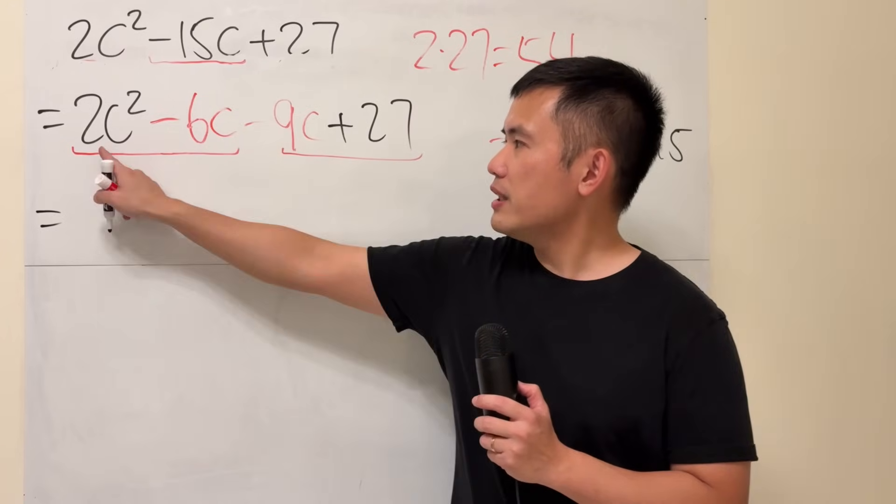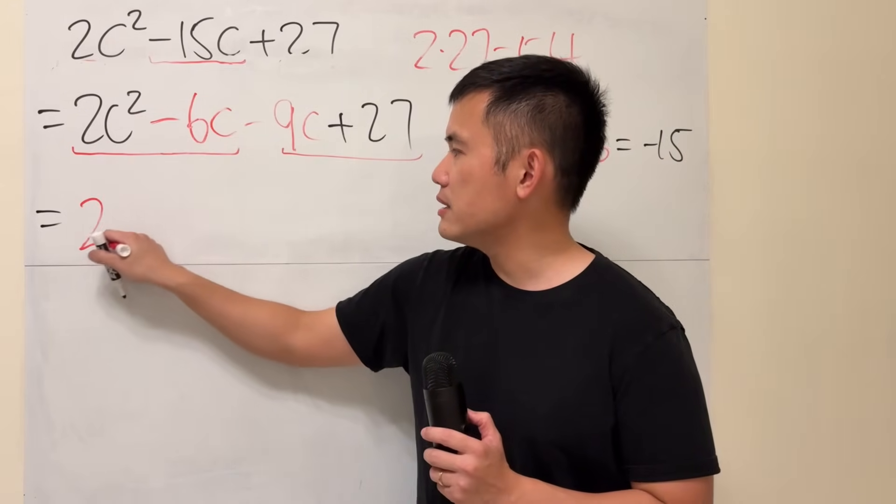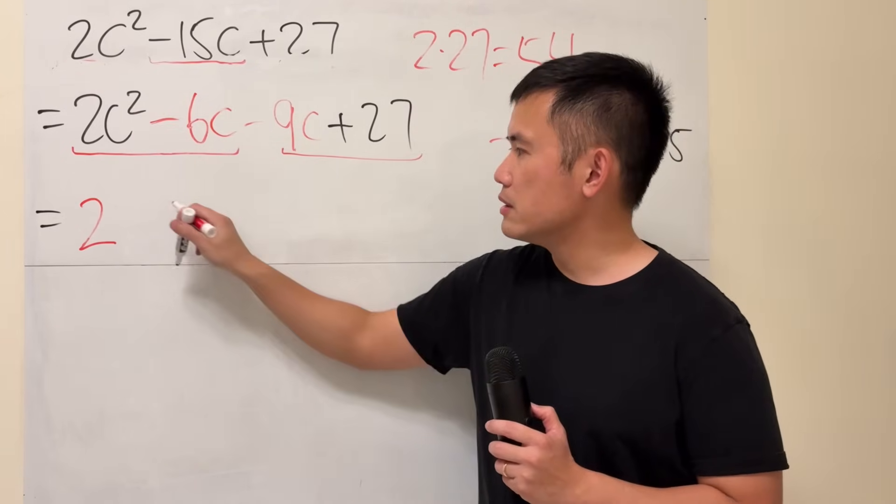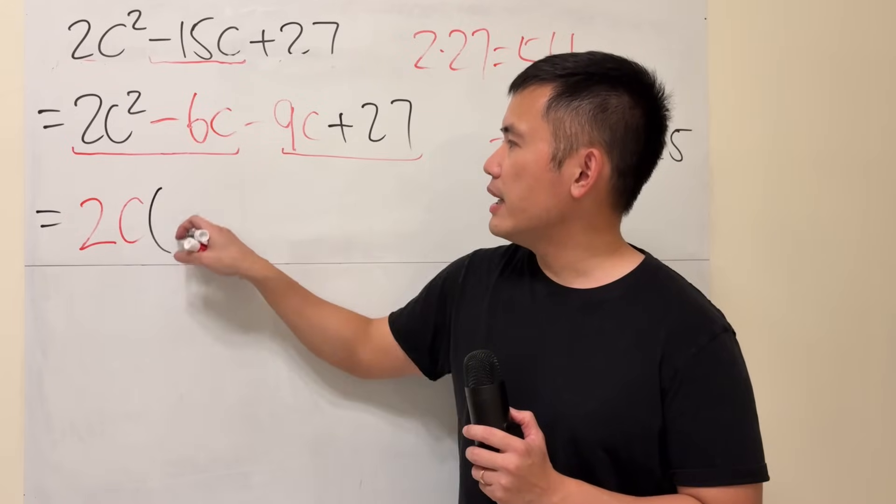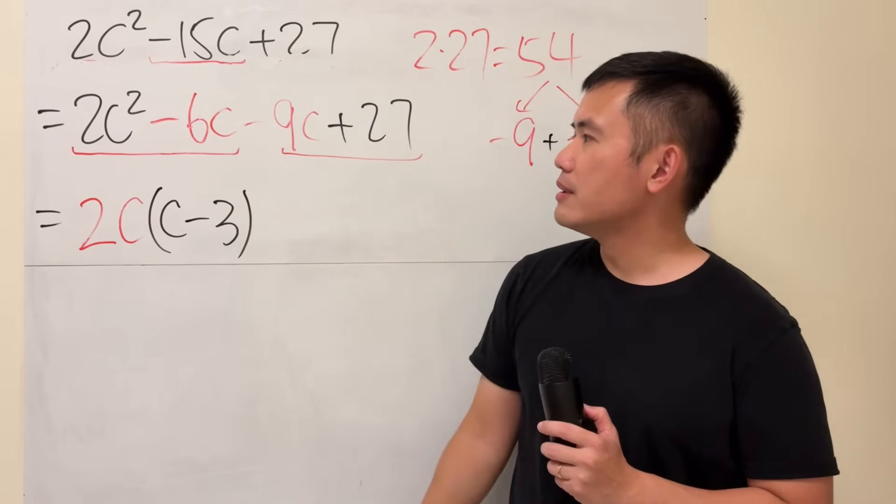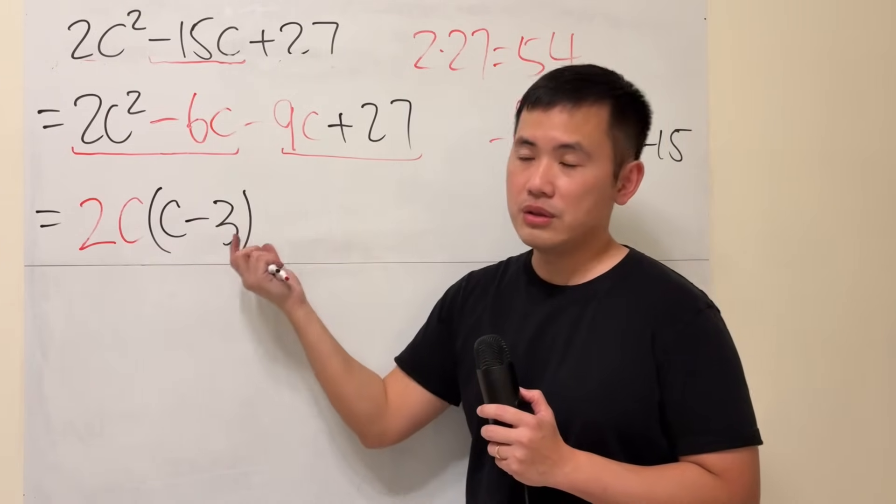For the first two terms, look at the number 2 and 6. We can factor out 2, so let's do that. c squared c, we can factor out the c. So let's do that. And then we will have c minus 3 left. Because negative 6c divided by 2c is negative 3, so this works.